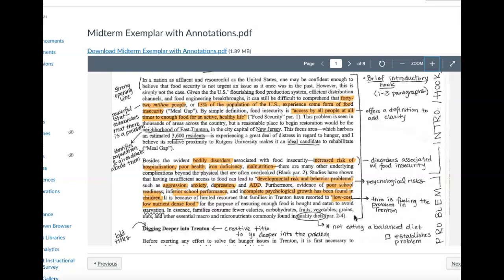It is because of limited resources that families in Trenton have resorted to low cost or low nutrition dense food for the purpose of ensuring enough food is bought and eaten to avoid starvation. In essence, families consume fewer calories, carbohydrates, fruits, vegetables, grains, nuts, and other essential macro and micronutrients commonly found in quality diets. So here there's a lot going on.